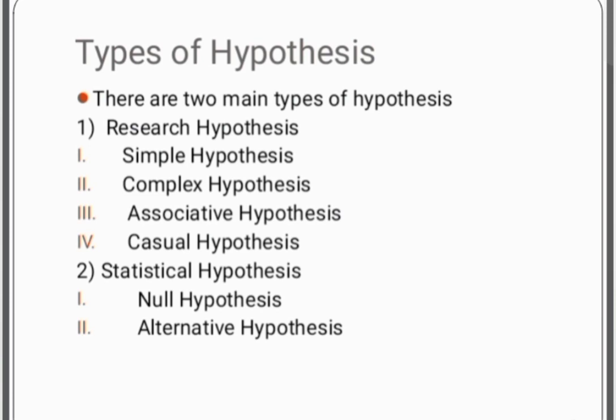Now we will discuss the subtypes of research hypothesis. The first type is simple hypothesis, which is a statement that reflects the relationship between two variables. The second type is complex hypothesis — when a hypothetical statement reflects the relationship between more than two variables, it is known as a complex hypothesis.